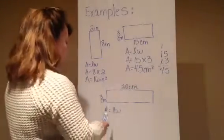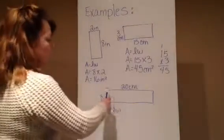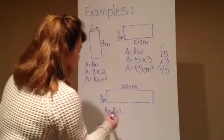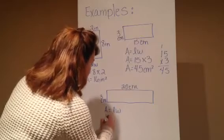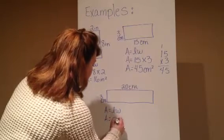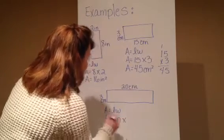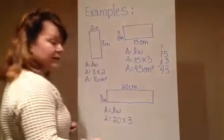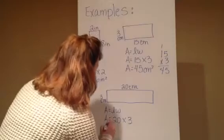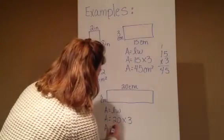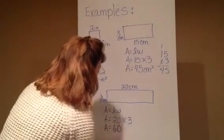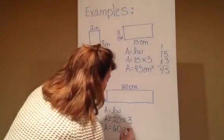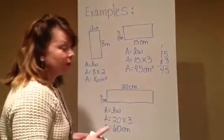Okay, if we take a look at the next rectangle, we have a pretty long one here. 20 centimeters is my length, so I'm going to take 20 times 3, which is my width, and I think that's a mental math problem. 20 times 3, that's going to give me 60 centimeters, you guessed it, squared.